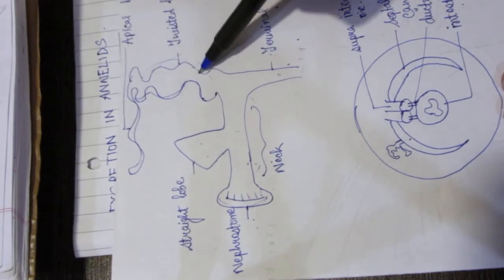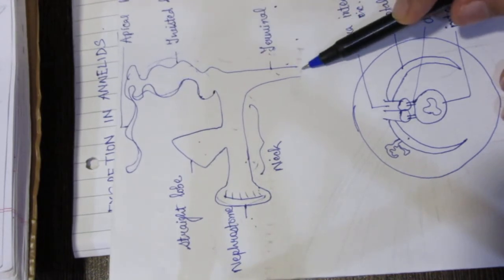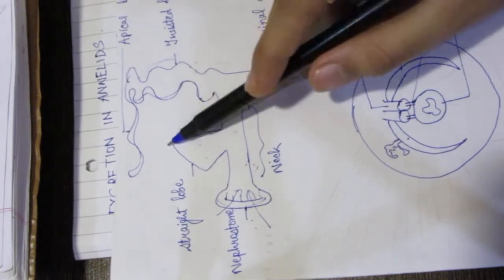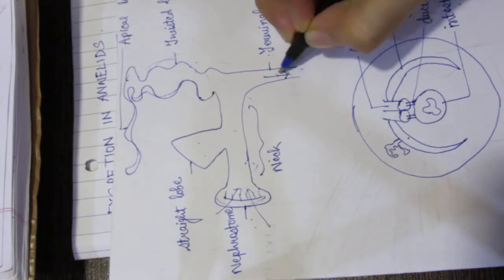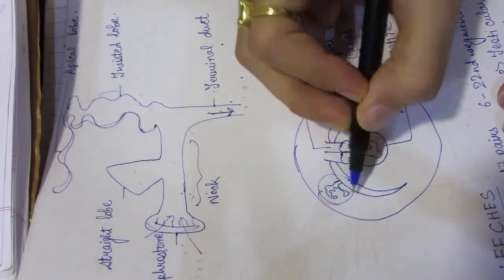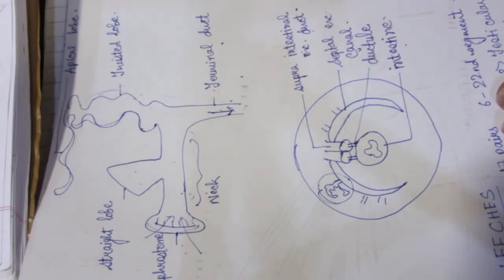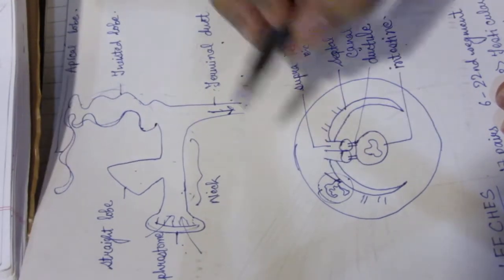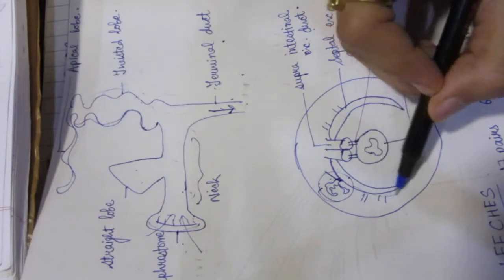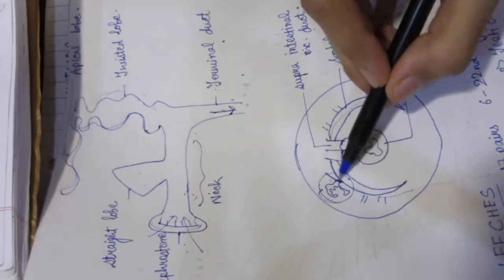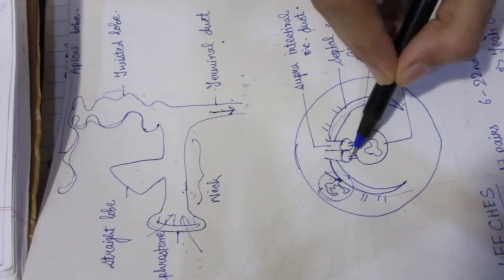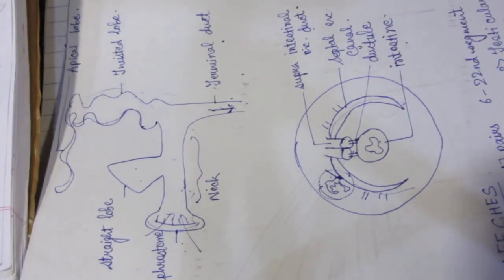The nitrogenous waste collected from all places goes to the terminal duct. Nephridia are present throughout, and each terminal duct opens into the septal excretory canal. There are 2 septal excretory canals per segment. These open into the supra-intestinal excretory duct, which runs through the intestine, and waste is finally removed from the body.